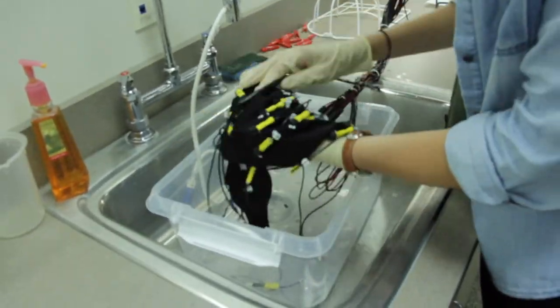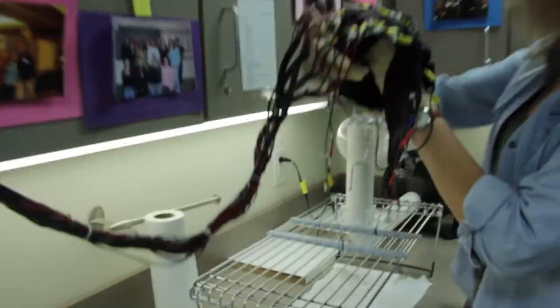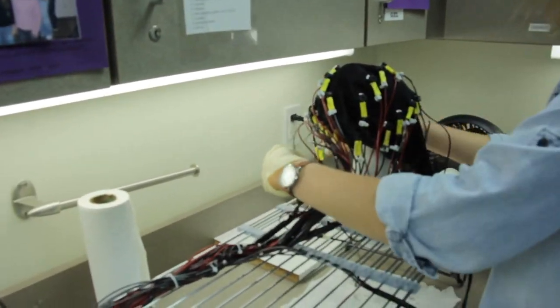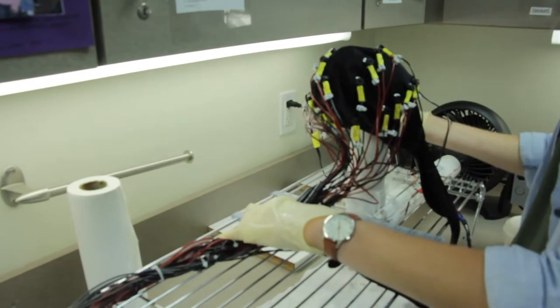Carefully transfer the cap from the wash tub to the dryer. Put your hand underneath the cap to support it. Do not hold the cap by the cap material as it can stretch the cap or the electrodes may pop out.